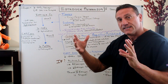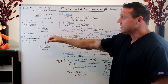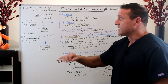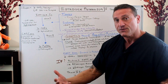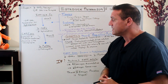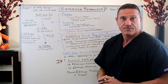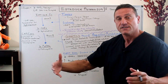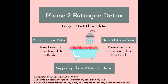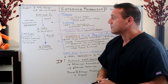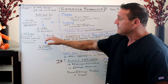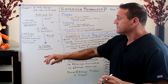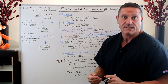Now the second phase — phase two — is conversion. This is when it converts from the two-hydroxyl estrone to the final metabolite that we need and utilize, which is 2-methoxy estrone. That's the final metabolite of estrogen. We do have a gene, the COMT gene — catechol-O-methyltransferase — that's involved in the conversion of 2-hydroxyl estrone to 2-methoxy estrone.